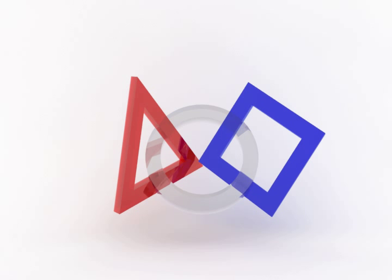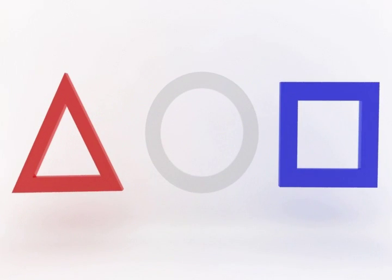The first logo is composed of three primitive shapes: a triangle, a circle, and a square.